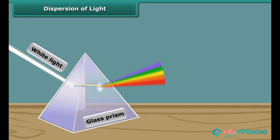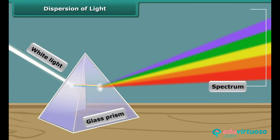When this light passes through a glass prism, the light splits into seven colors.